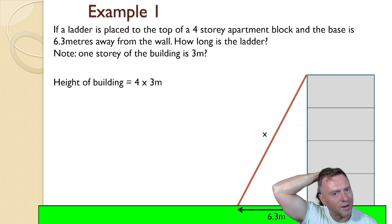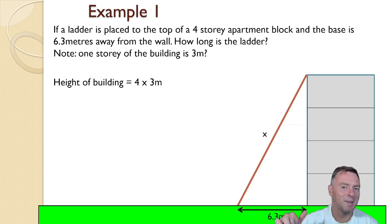So the first step is we want to find the actual height of the building in the same measurement as that 6.3 meters. And we do that by timesing the four stories by three meters. And that gives us the 12 meter measurement. Next we would then go h squared is equal to a squared plus b squared.